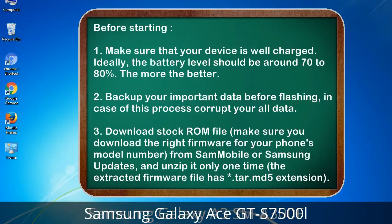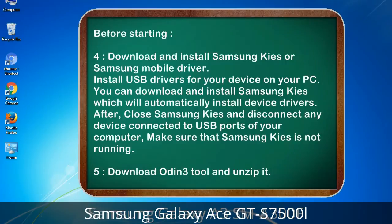Make sure you download the right firmware for your phone's model number from Sammobile or Samsung updates, and unzip it only one time. The extracted firmware file has a *.tar.md5 extension. 4. Download and install Samsung KIES or Samsung mobile driver. Install USB drivers for your device on your PC. You can download and install Samsung KIES which will automatically install device drivers. After, close Samsung KIES and disconnect any device connected to USB ports of your computer. Make sure that Samsung KIES is not running.